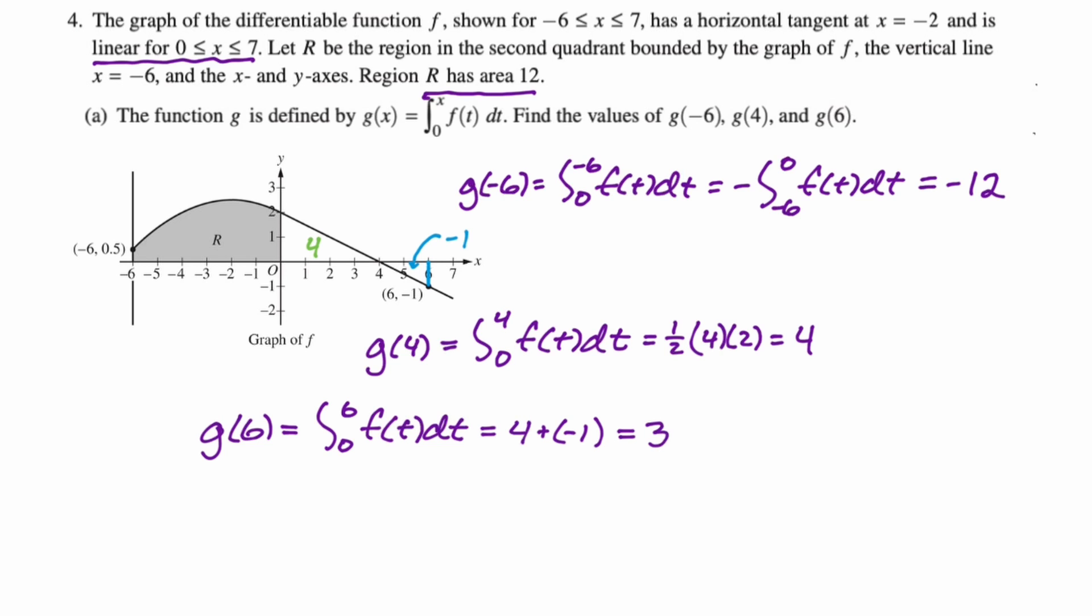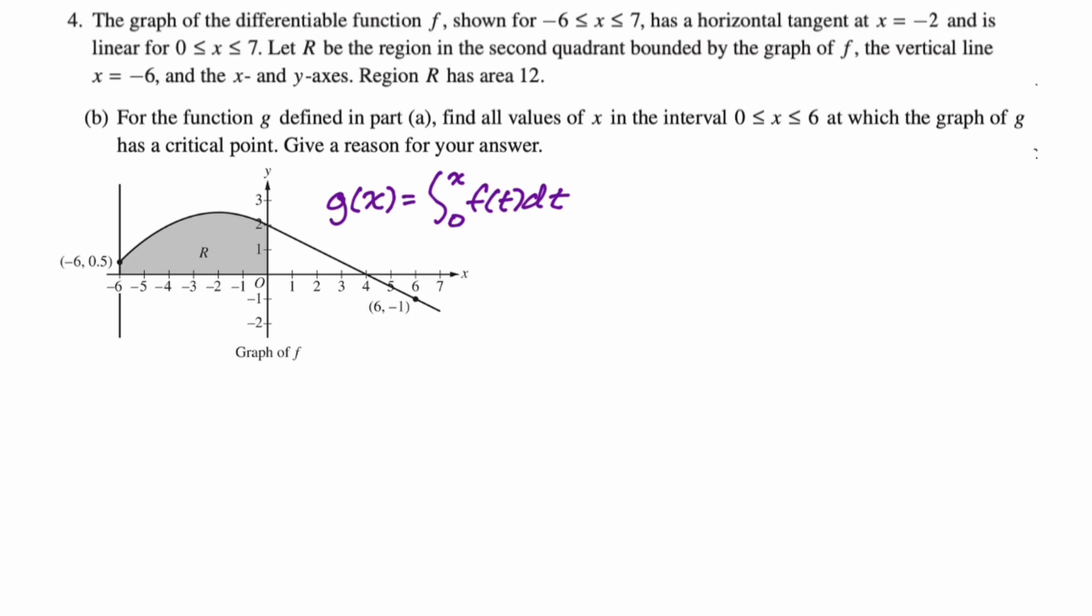The function g defined in part a, which was the integral from zero to x f of t dt. Find all values of x in the interval zero to six, at which the graph of g has a critical point, give a reason for your answer.